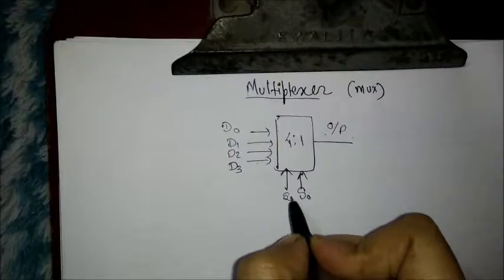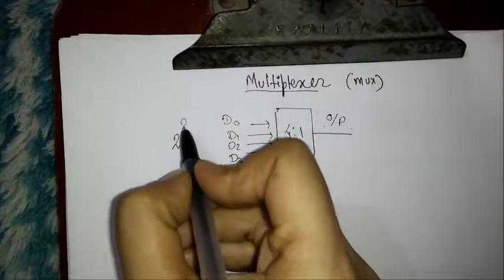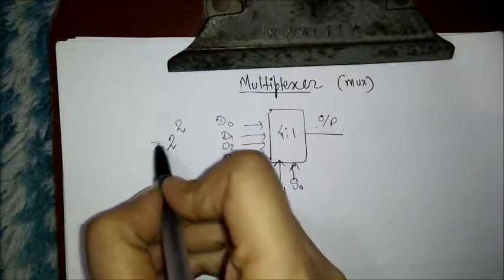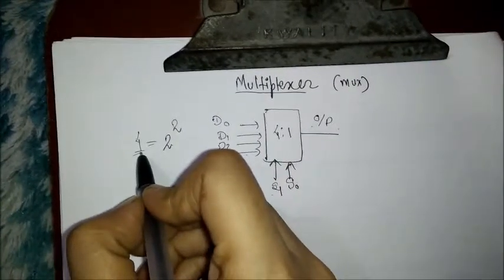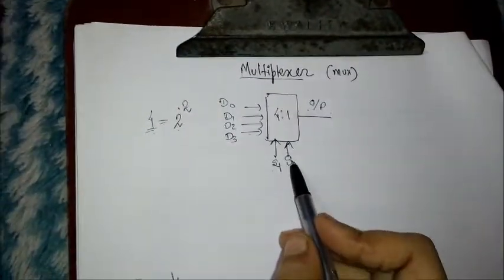Now, how do we find out how many select lines there will be? For that, we have the formula 2 to the power n. As we have 4 inputs, 4 can be represented as 2 to the power 2, where 2 is the number of select lines.